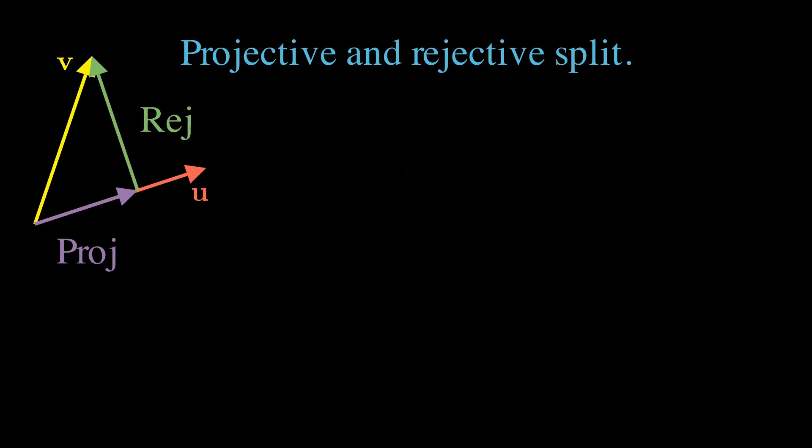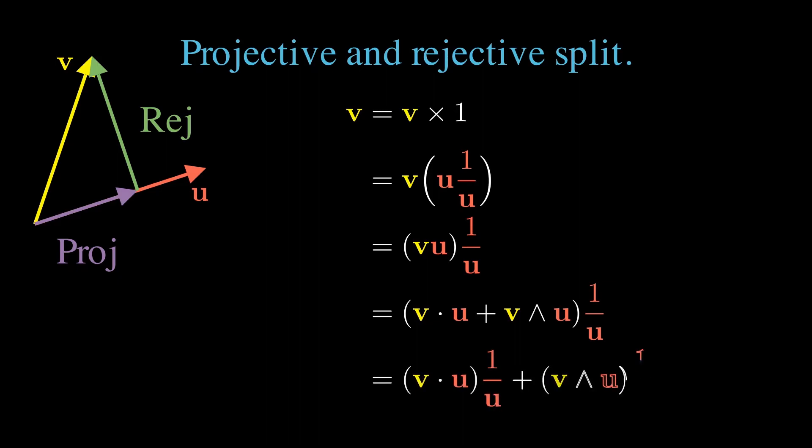We can perform the same computation by multiplying v by 1 equals u u inverse on the right. We've managed to split v into two components two different ways. We must now demonstrate that these satisfy our expectations for projection and rejection.